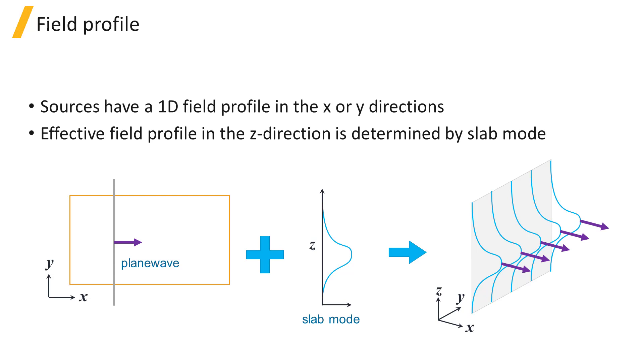When the fields are expanded along Z, the field profile of the injected mode has the profile of the slab mode in the Z direction instead of a uniform field profile as you would expect for a plane wave.